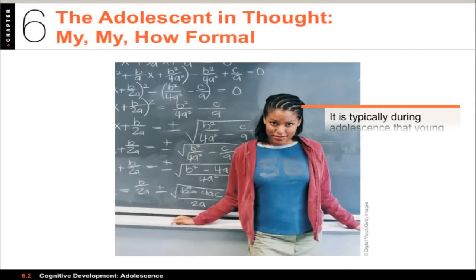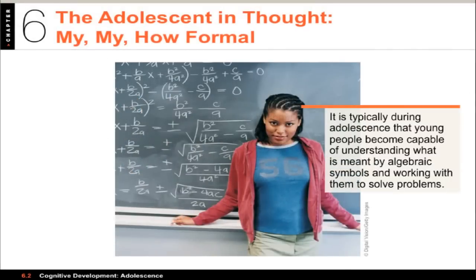The first thing we want to talk about is some of Jean Piaget's research. Remember, we started talking about him in infants on cognitive developmental theory. In terms of dealing with formal operations in Piaget's theory, adolescents have reached cognitive maturity. The formal operations stage is the ability to deal with abstract concepts, and that's what Piaget was most interested in. It's characterized by the capacity for flexible, reversible operations on abstract ideas and concepts — things like symbols, statements, and theories.